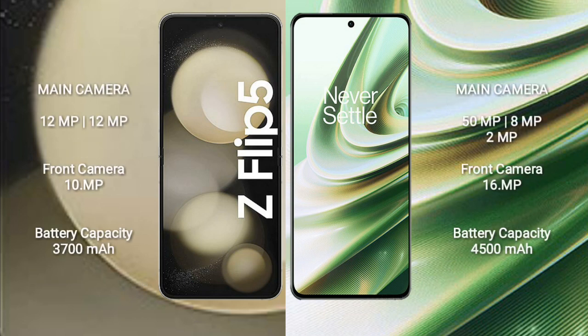Samsung Galaxy Z Flip 5 has a dual rear camera setup: 12MP plus 12MP, and a 10MP front camera. OnePlus 10R has a triple rear camera setup: 50MP plus 8MP plus 2MP, and a 16MP front camera.